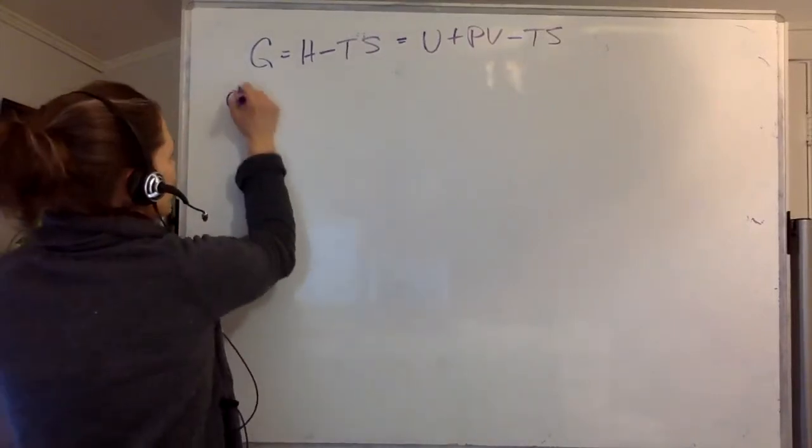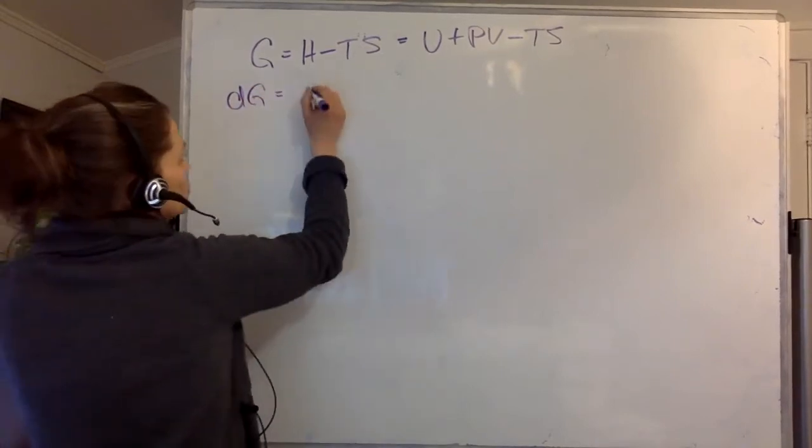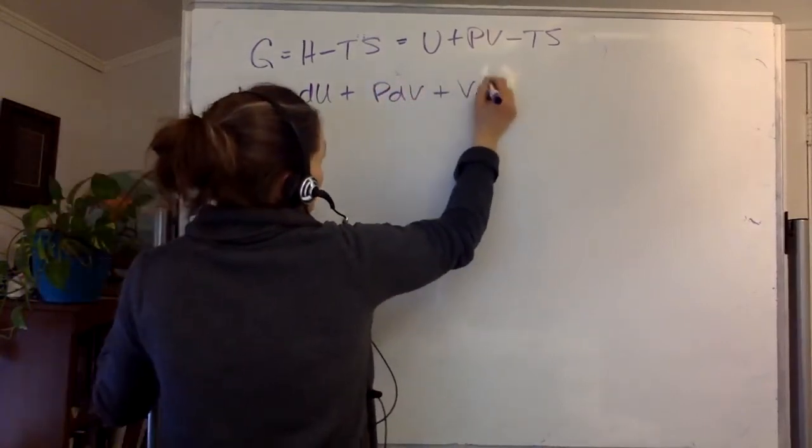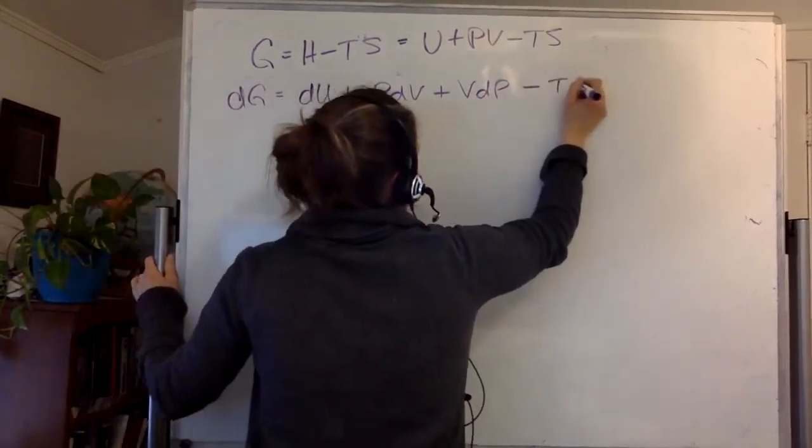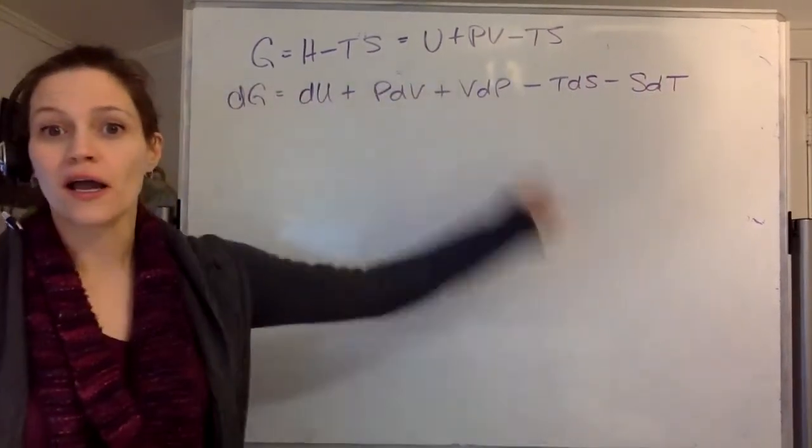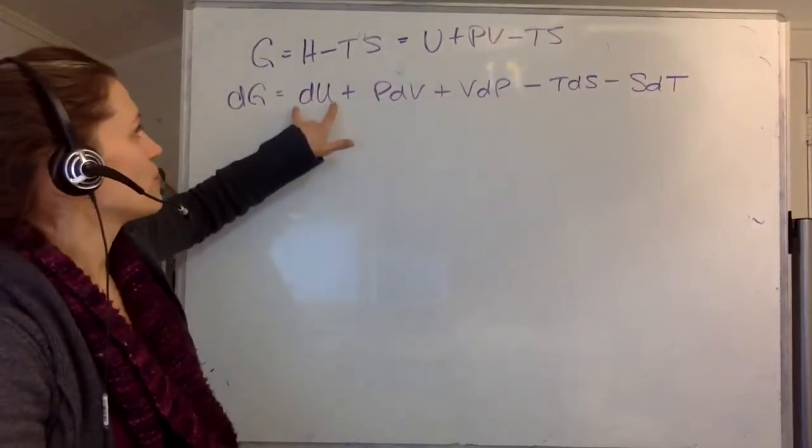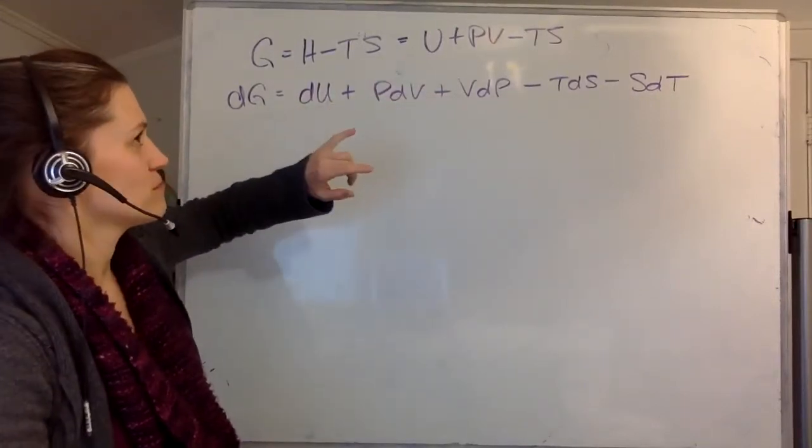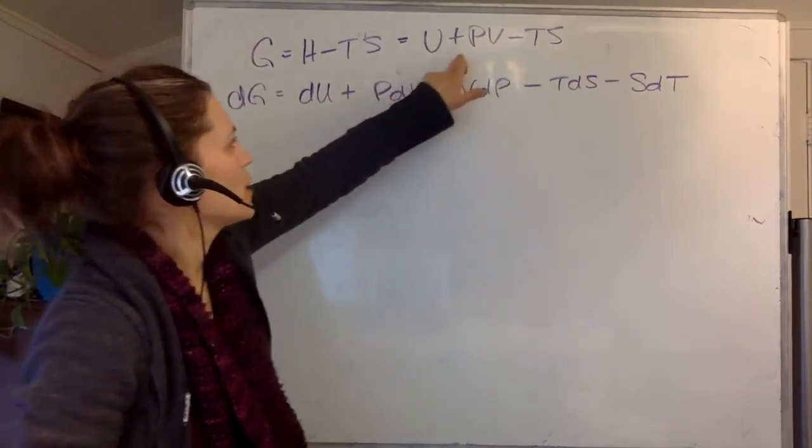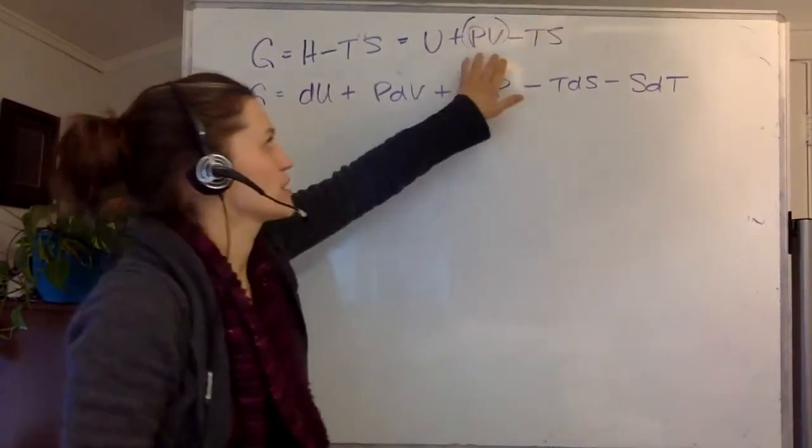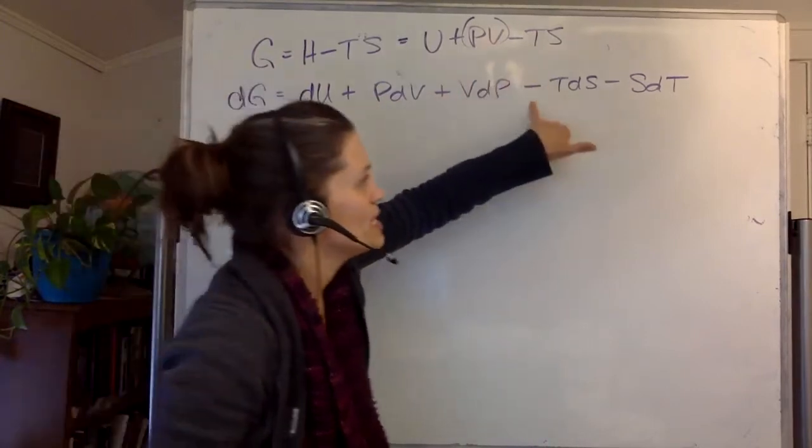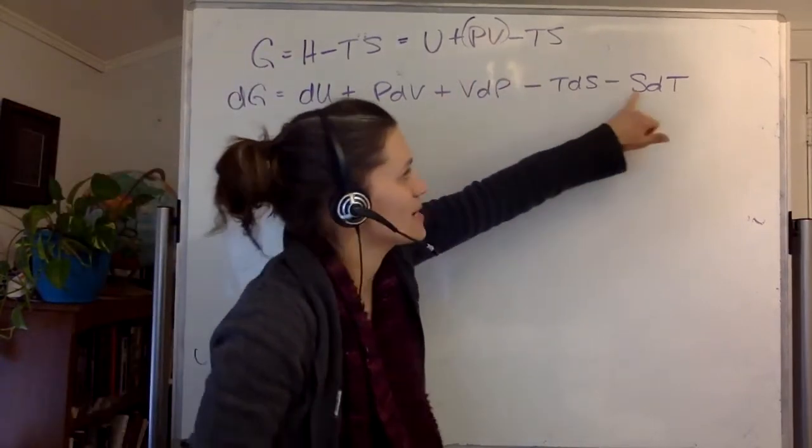So now I want to take dG, and that's going to be equal to dU plus PdV plus VdP minus TdS minus SdT. I hope you followed along. That's chain rule to its finest. And you've got product rule. So you've got dU, plus quantity PV - if you want to look at the change of that, you have to look at pressure times the change in volume plus volume times the change in pressure, same minus TdS minus SdT.